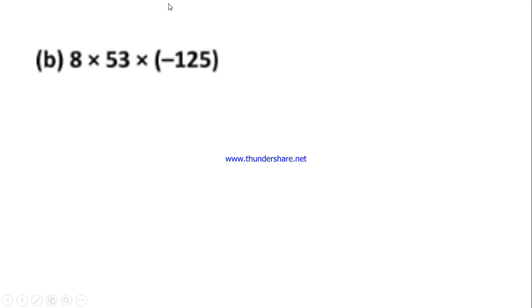Without using properties, if you solve this, it takes time. 8 × 53 we have to multiply, we will have a 3-digit number. Then again with that number we will multiply, 3-digit by 3-digit takes much time. Instead of that, if you apply the properties, we can solve easily.